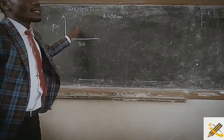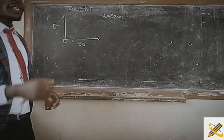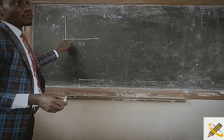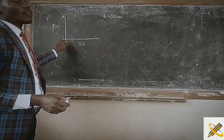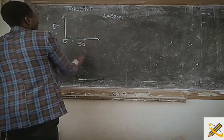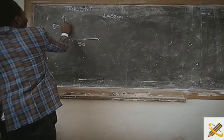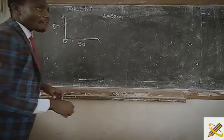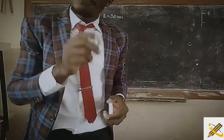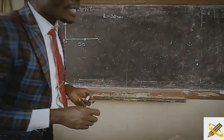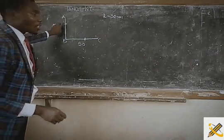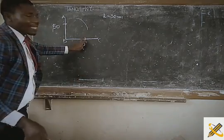If I am supposed to draw an arc of radius 30mm joining these two perpendicular lines together, the very first thing you do is pick your ruler and from point B — the perpendicular junction — measure 30mm towards this area. Then measure 30mm from this side also towards the top.